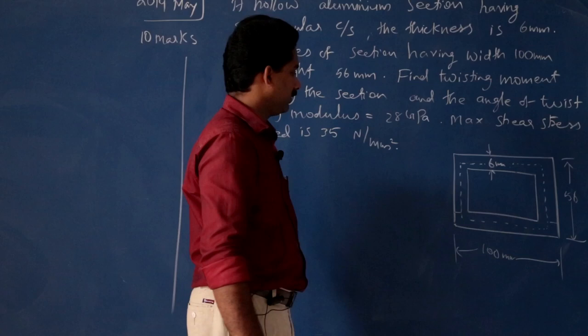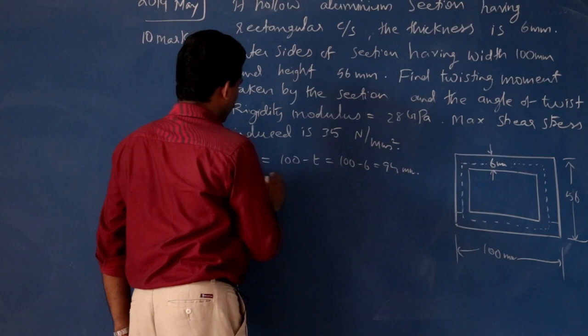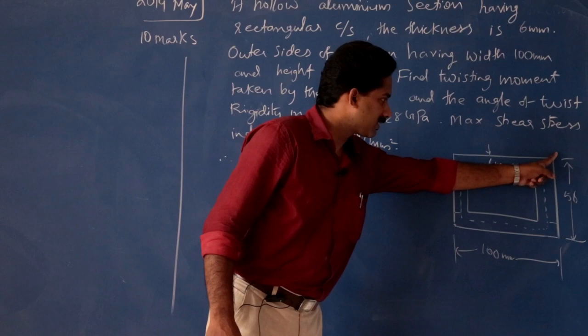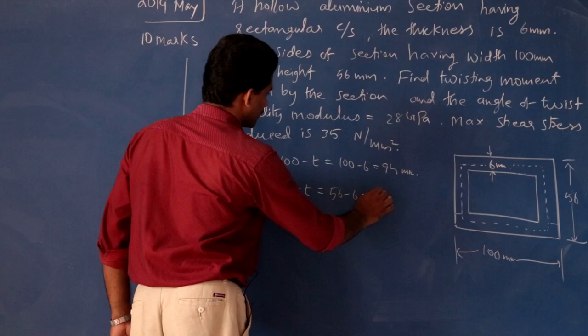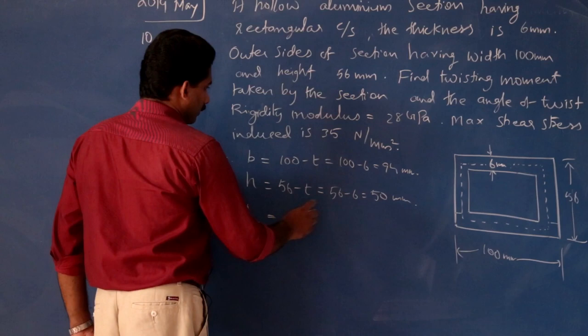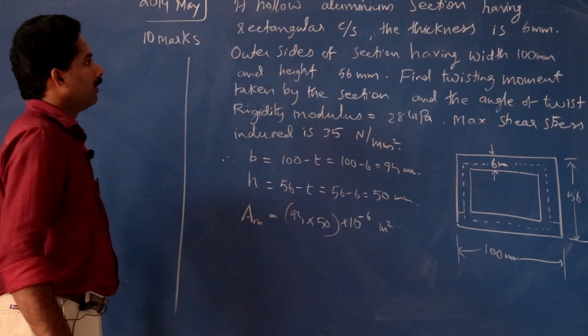For the university examination question: outer length 100 mm, outer height 56 mm. So b equals 100 minus t equals 100 minus 6, equals 94 mm. Now, height small h is equal to total outer height 56 minus t, so 56 minus 6, equals 50 mm. So Am is 94 into 50 into 10 raised to minus 6, that much m squared.